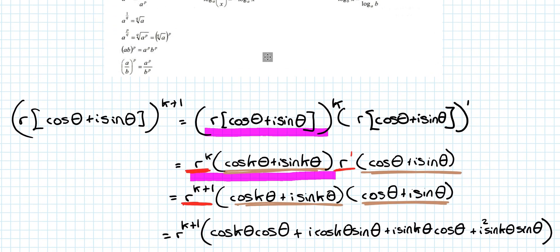Now I have to be a little bit more careful, because I'm actually multiplying these out slowly. So what do we get? cos k theta by cos theta is cos k theta cos theta. cos k theta by i sin theta is i cos k theta sin theta. i sin k theta by cos theta is i sin k theta cos theta. i sin k theta by i sin theta is i squared sin k theta sin theta.